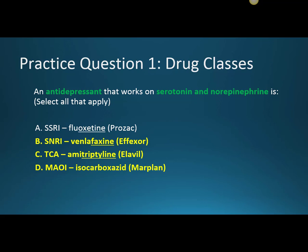SNRIs work on both serotonin and norepinephrine, and so do TCAs like amitriptyline. The MAOI also works on dopamine. The Selective Serotonin Reuptake Inhibitors like fluoxetine work on serotonin only.